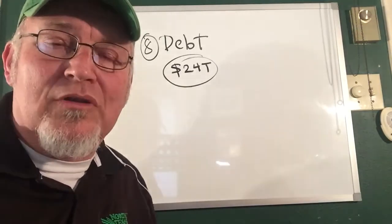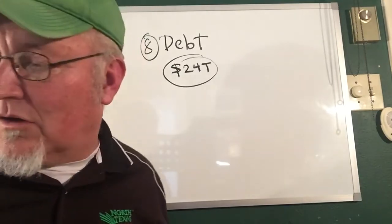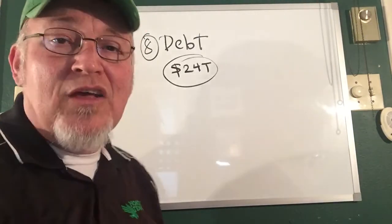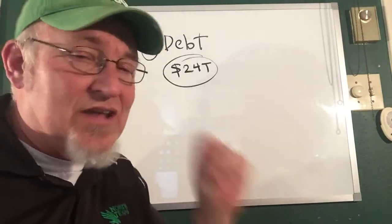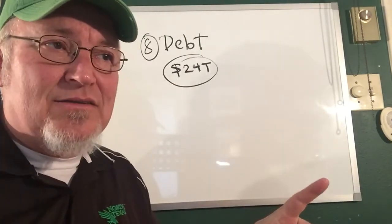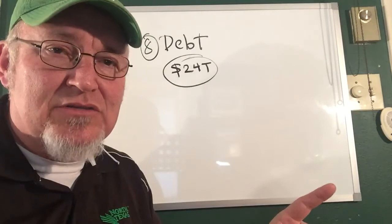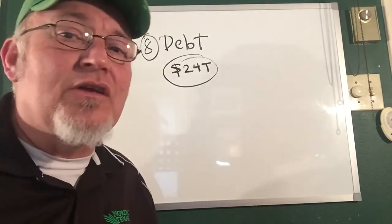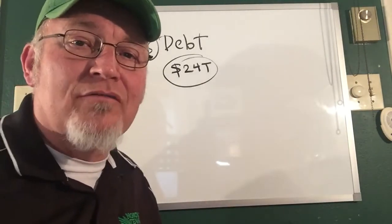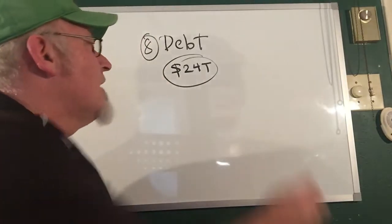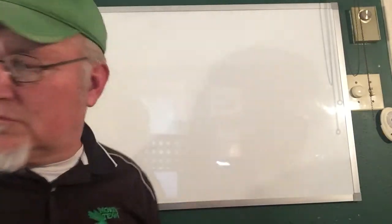So that's the difference between a deficit and a debt. Deficit is an annual look, government spending versus tax receipts, versus debt which is the accumulation of all of those deficits. Alright, now number nine.